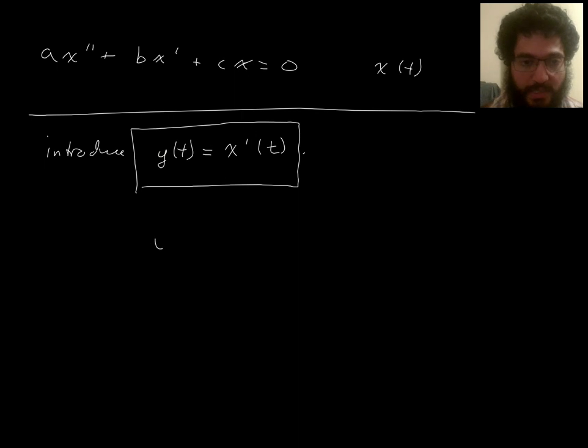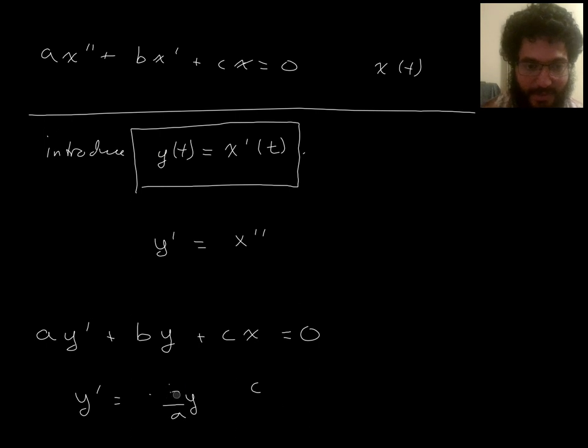So if y is x prime, then y prime is x prime prime, right? So what does this look like? It looks like a x prime prime, which is y prime, plus b x prime, which is y, plus c x, which is just x. And so I can solve this for y prime.